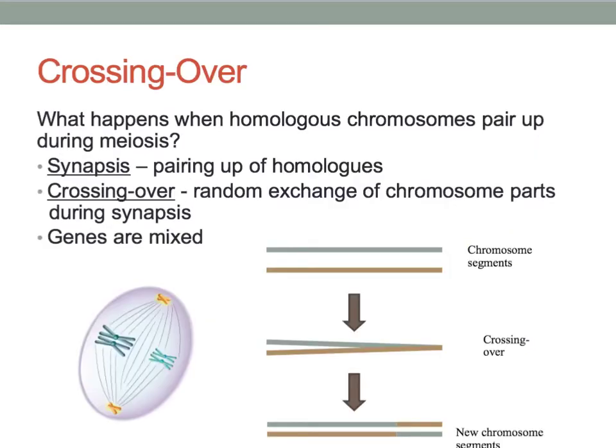What happens when homologous chromosomes pair up during meiosis? The process by which the homologous chromosomes pair up is called a synapse. During synapse there's a potential for random exchange of chromosome parts or segments. This event is known as crossing over and mixes up the genes of the chromosomes, increasing genetic variation.